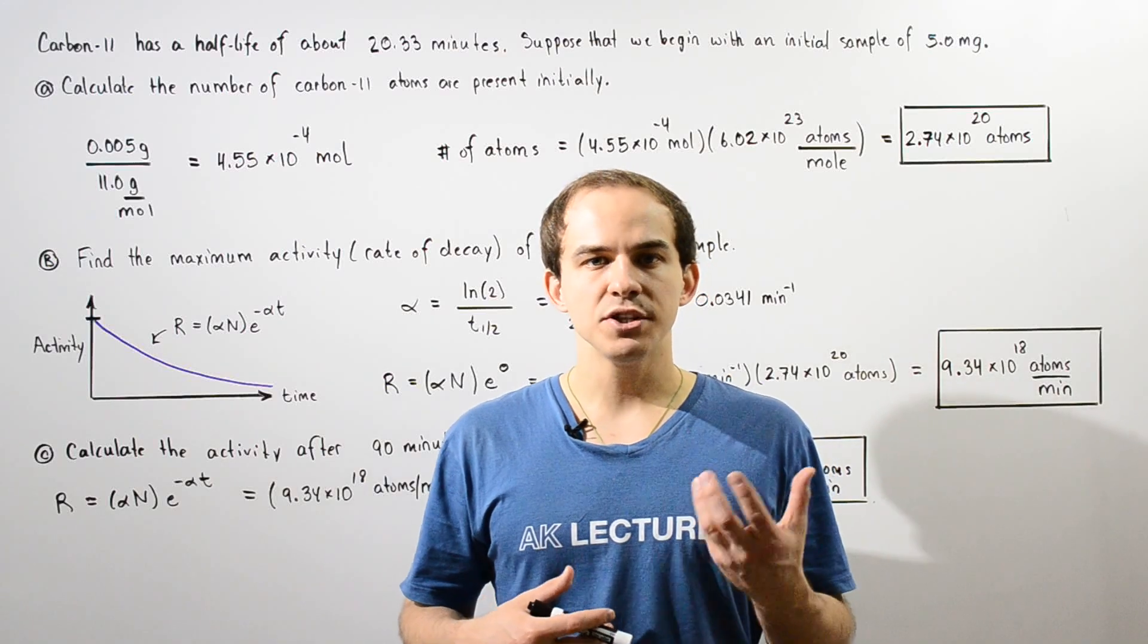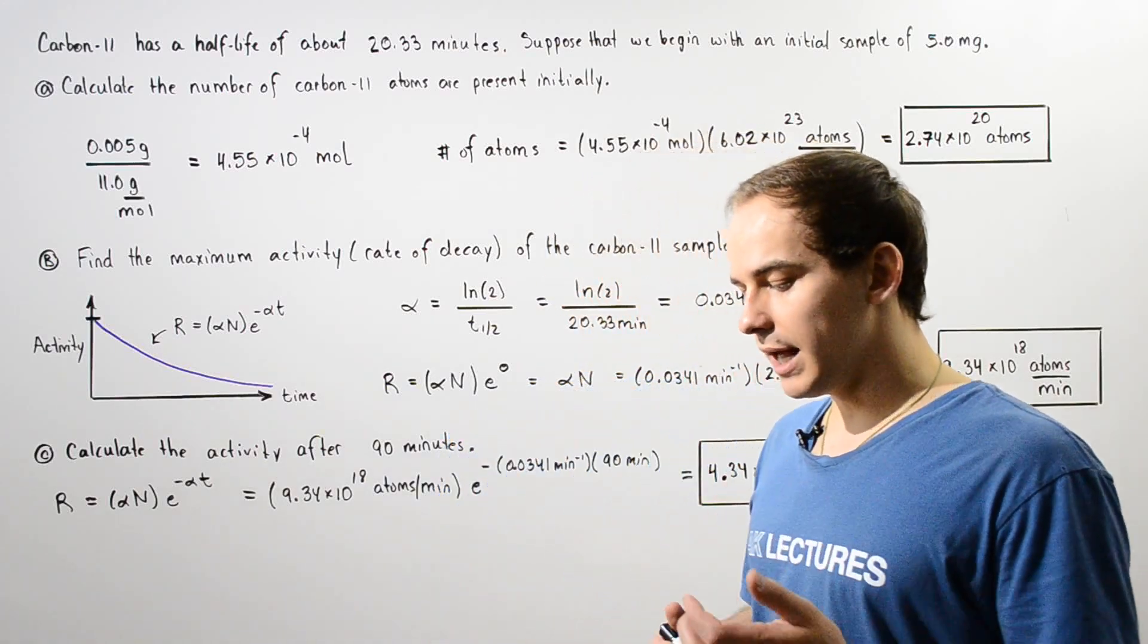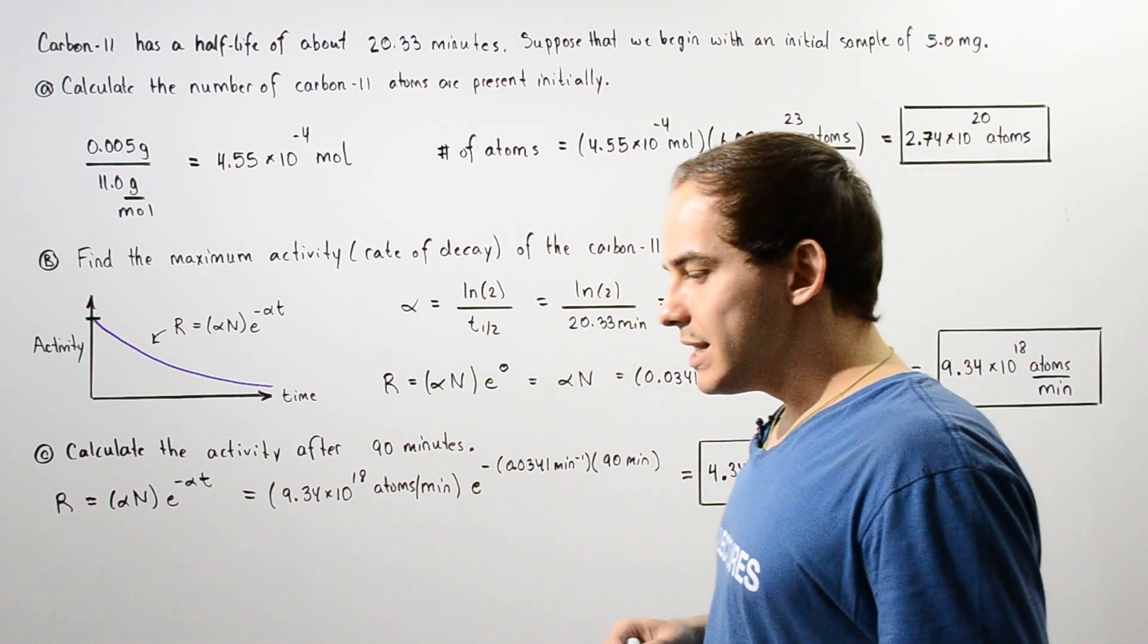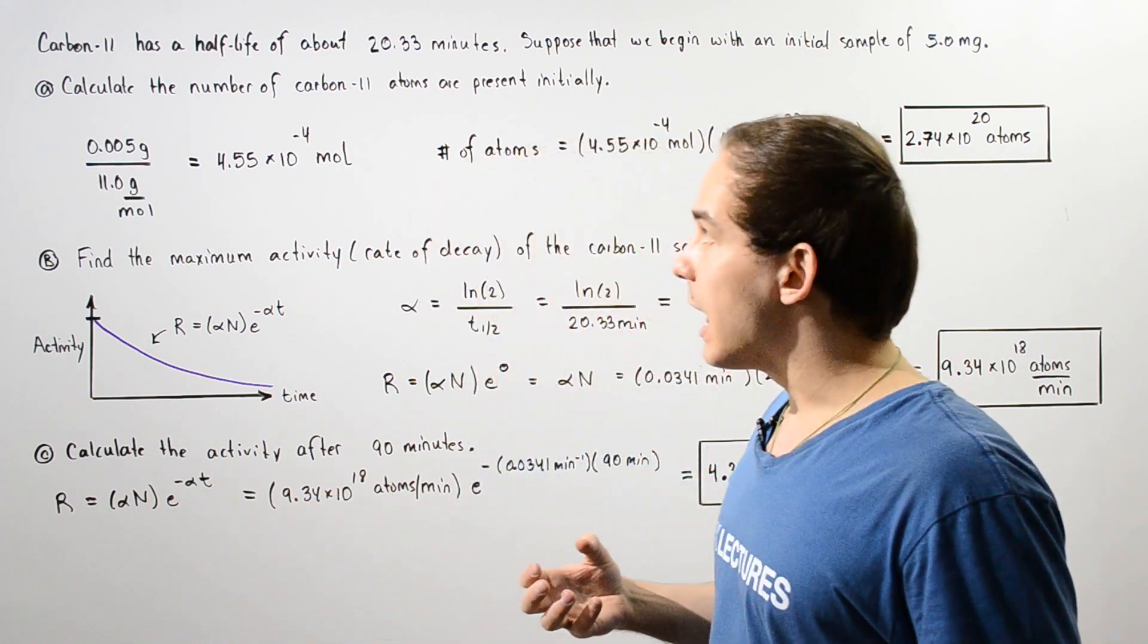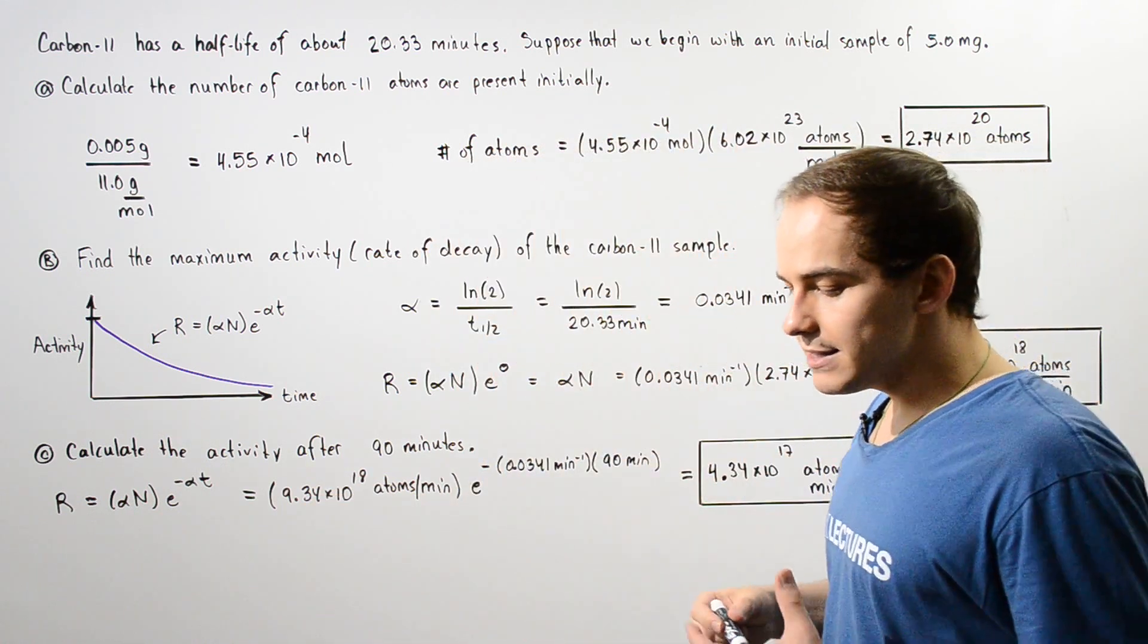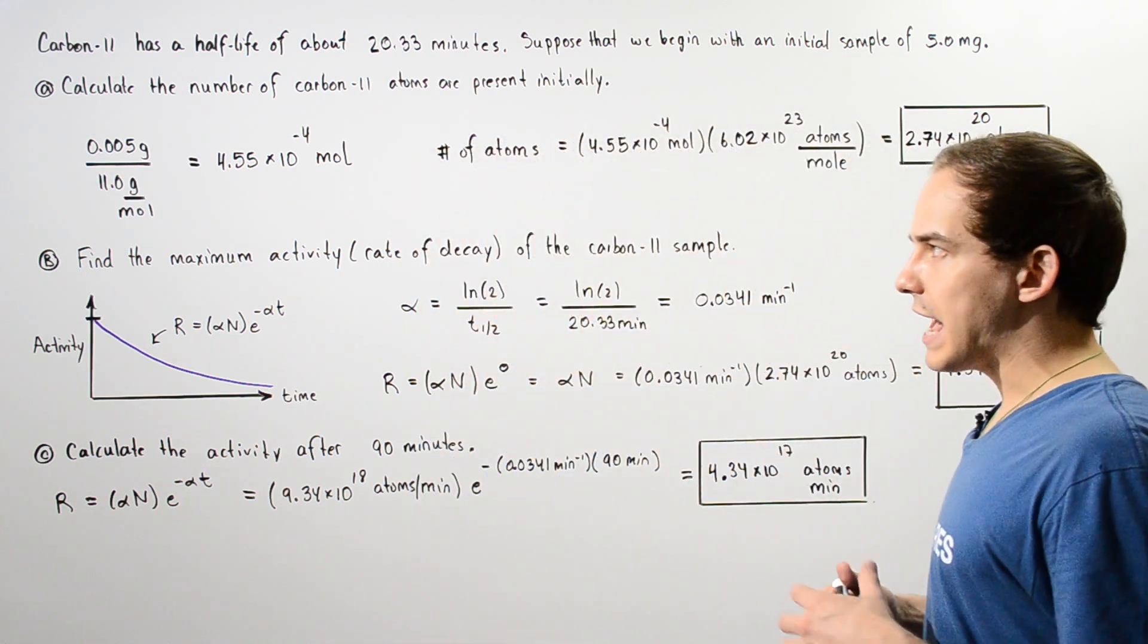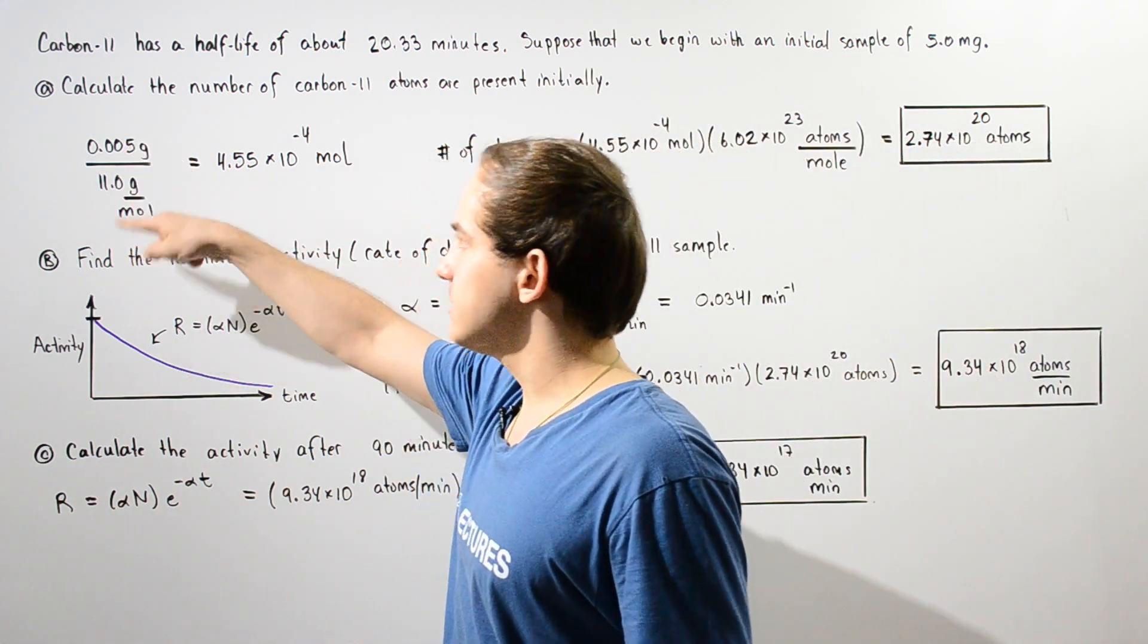Let's suppose that we begin with a certain sample of carbon-11 isotopes. Our initial sample is 5 milligrams. Now we know that the half-life of carbon-11 is about 20.33 minutes. Using these values, we want to calculate parts A, B, and C.